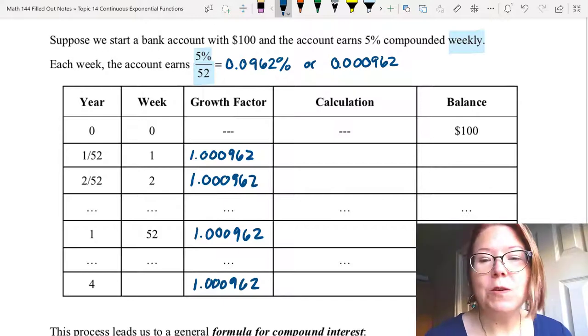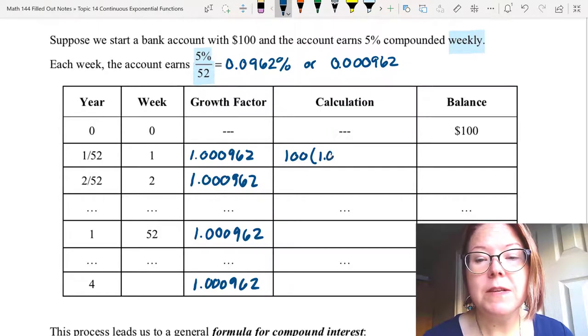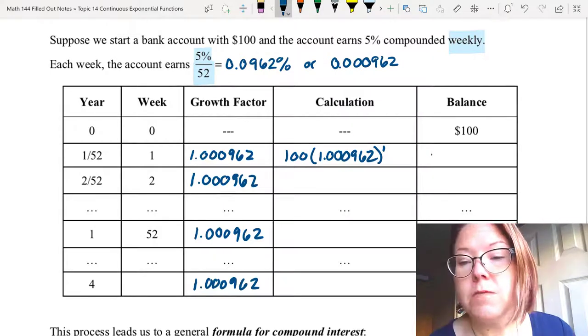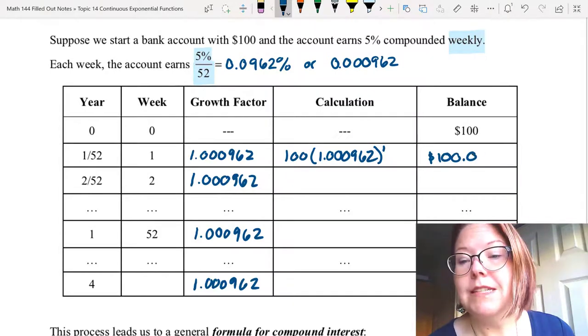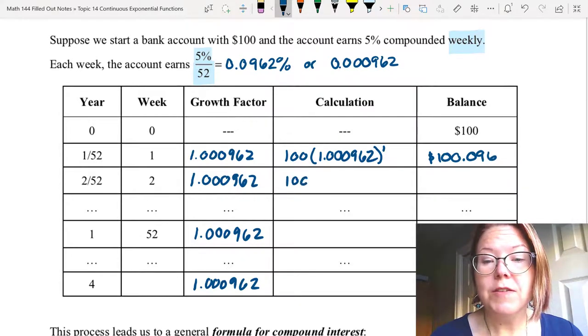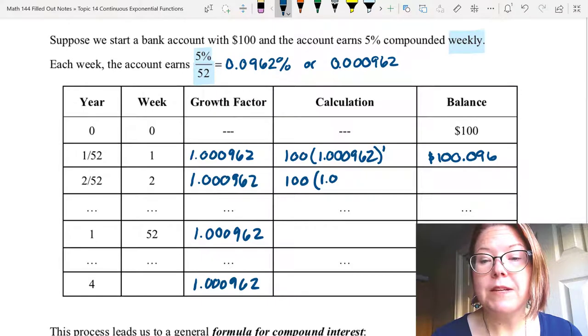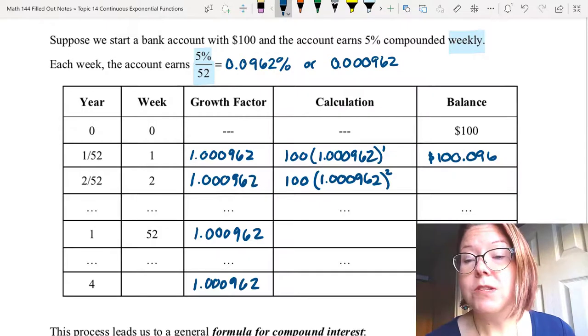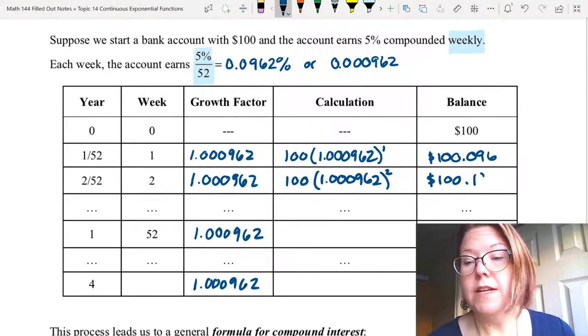The first calculation is for week one. We would take $100 times (1.000962) to the first power. The result is 100.096. In week two, the calculation would be 100 times 1.000962. And that growth factor is raised to the second power. The result in dollars is 100.192.